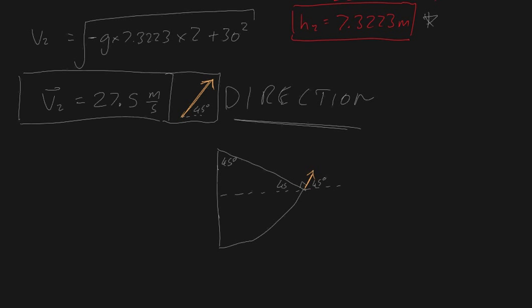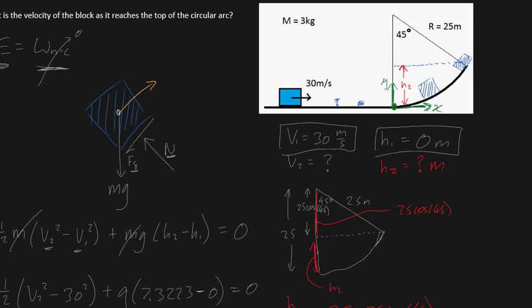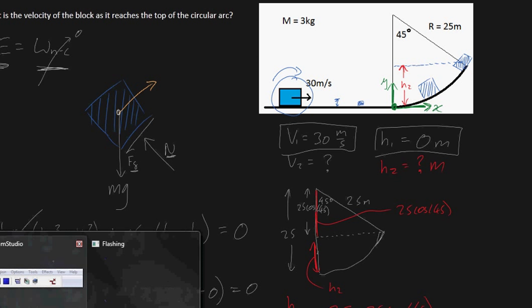In the next video I'm solving the exact same question, except replacing the block with a disc that's rotating as it goes up this hill. As a quick question for you: do you think the disc will have a higher, lower, or equal velocity to the block? I'll see you in the next video. Catch you later.